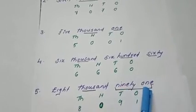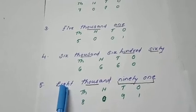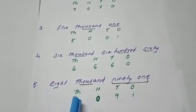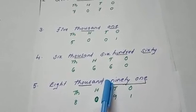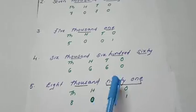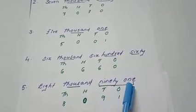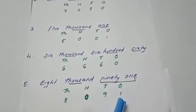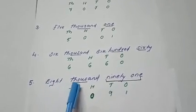The last example: 8091. Same way — how many thousands? 8. Below 1000, I will write the numeral 8. Is there any hundred given after 1000? No. So the hundreds place will take 0. Then 91 — 91 means 9 tens and 1 one. So under tens I will write the numeral 9, and under ones I will write the numeral 1. So 8091 — the numerals are 8, 0, 9, 1.